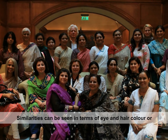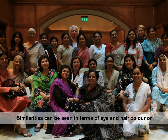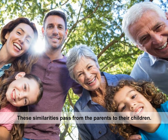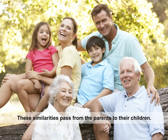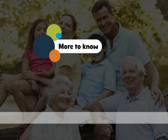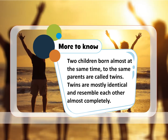Similarities can be seen in terms of eye and hair color or shape. These similarities pass from the parents to their children. More to know: two children born almost at the same time to the same parents are called twins. Twins are mostly identical and resemble each other almost completely.